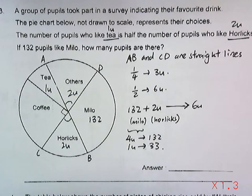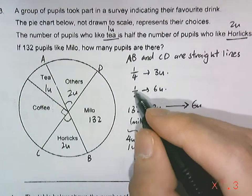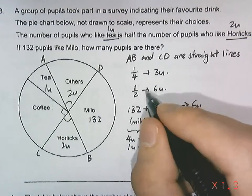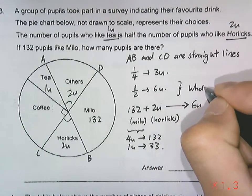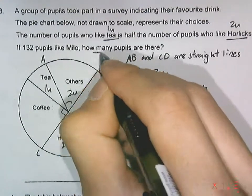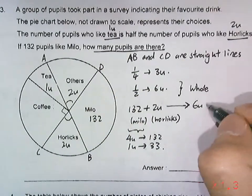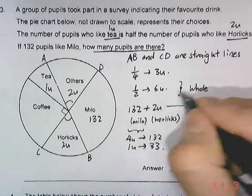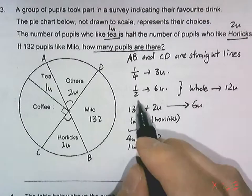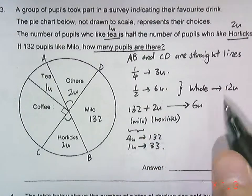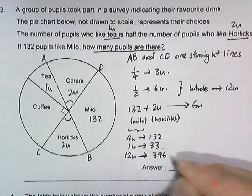We can simply take half times two, so the entire pie chart would be one whole, which is represented by the total number of pupils required to find in the question. Six units represents half, so the whole represents 12 units. You can just multiply 33 times 12 to give you 396.